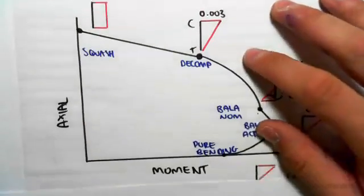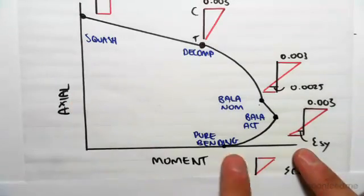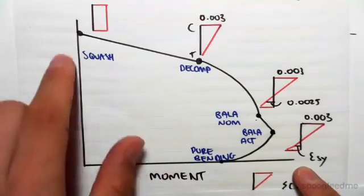Here's the strength interaction diagram. Now, the strength interaction diagram plots moment against axial load. So moment against axial, and it looks like this.